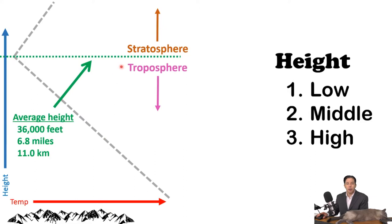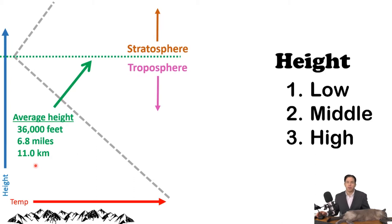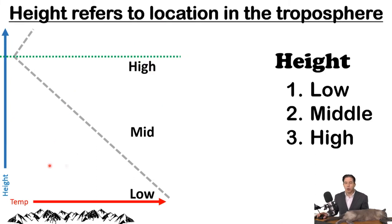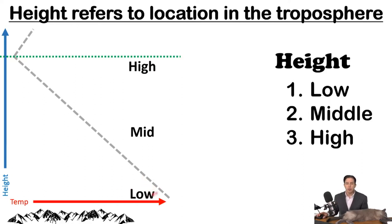The actual height of the troposphere depends on where you live and the time of year. On average, it's about 11 kilometers high. For New Mexico in the summer, it could be 15 to 20 kilometers high. High, middle, and low depends on where you are in this layer. A low cloud is near the bottom, not touching the ground. Middle clouds are in the middle, and high clouds are up near the top of the troposphere.